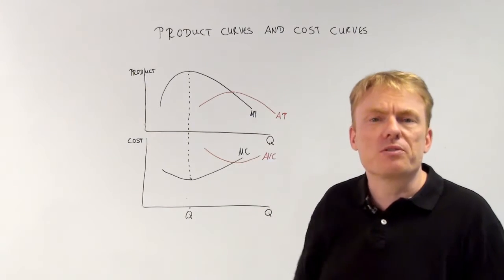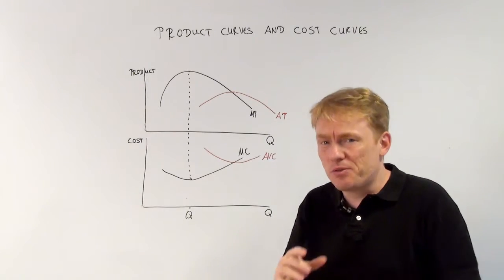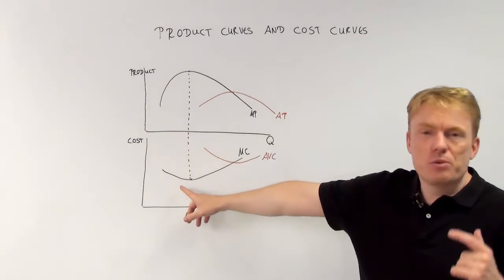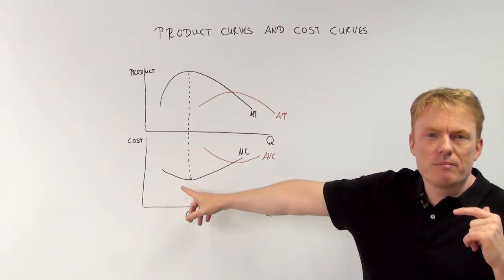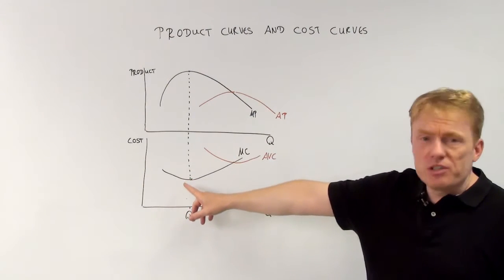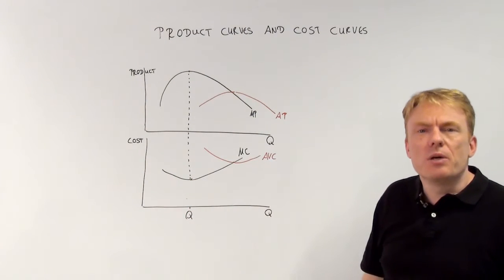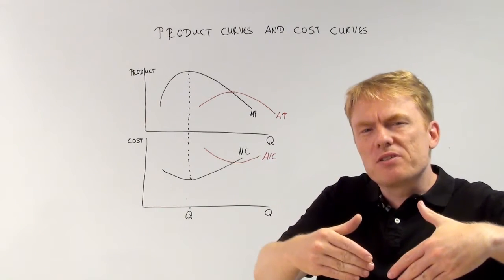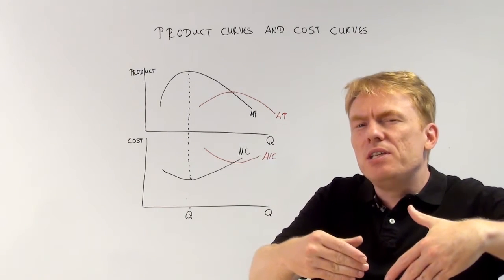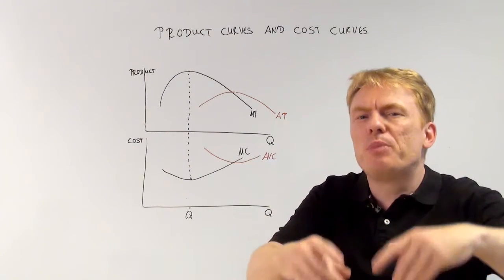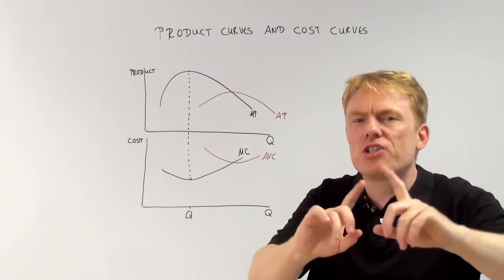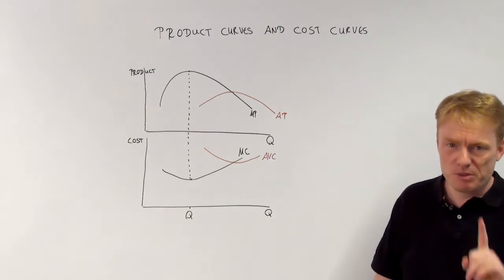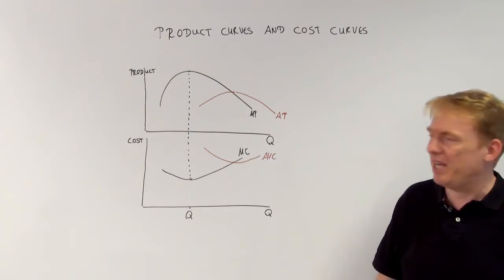If total product rises faster than the quantity, the cost will go down. Marginal cost will go down, which means the cost incurred by one additional unit of quantity will go down. This is important to understand.